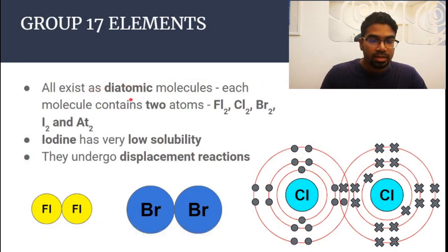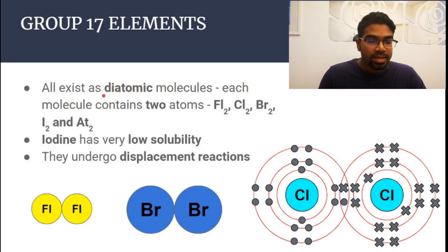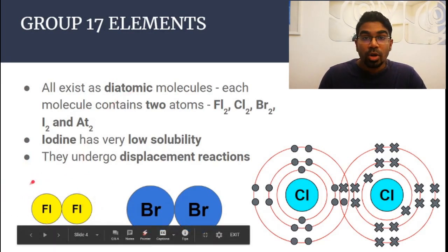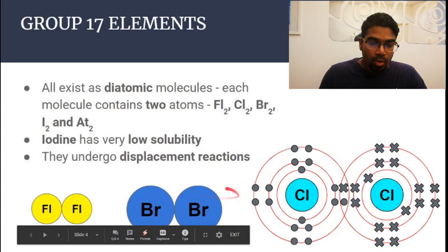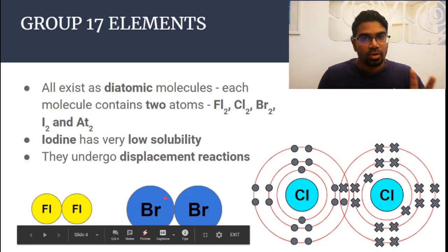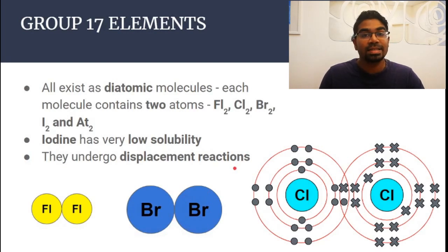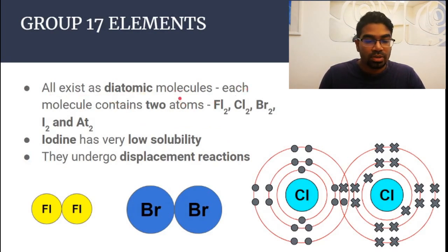They are called diatomic molecules because they exist as two atoms — a molecule containing two atoms. 'Di' is a prefix for two. One molecule of fluorine is made up of two fluorine atoms bonded covalently. One molecule of bromine exists as two bromine atoms bonded covalently. This contrasts with group 18 noble gases, which exist as monoatomic atoms — single atoms — whereas group 17 elements exist as diatomic molecules.